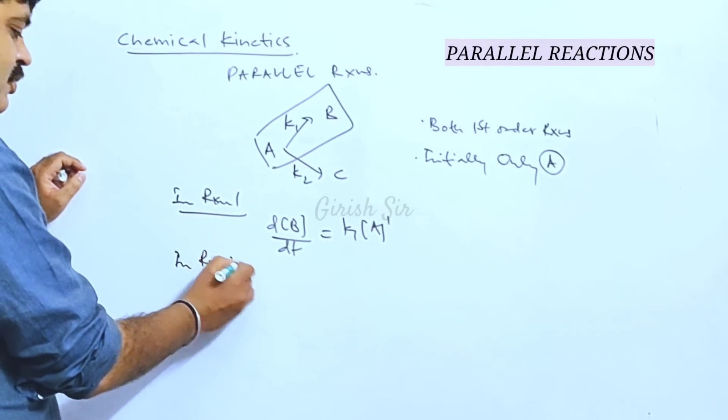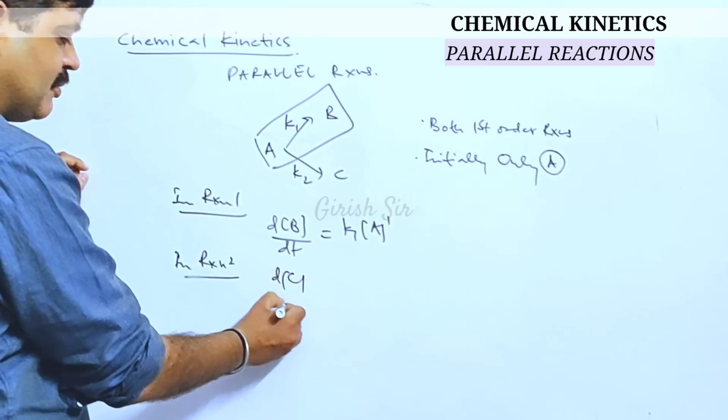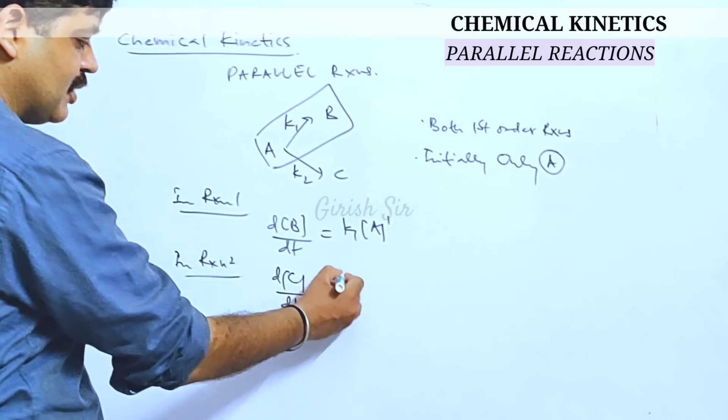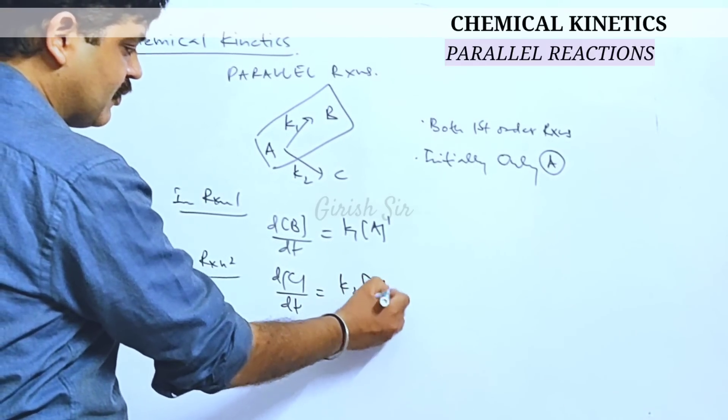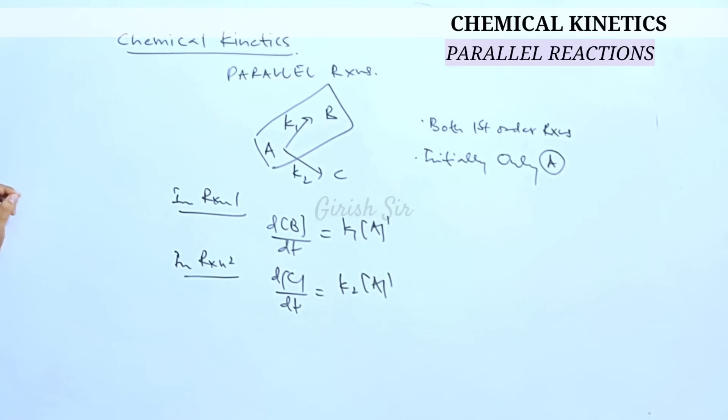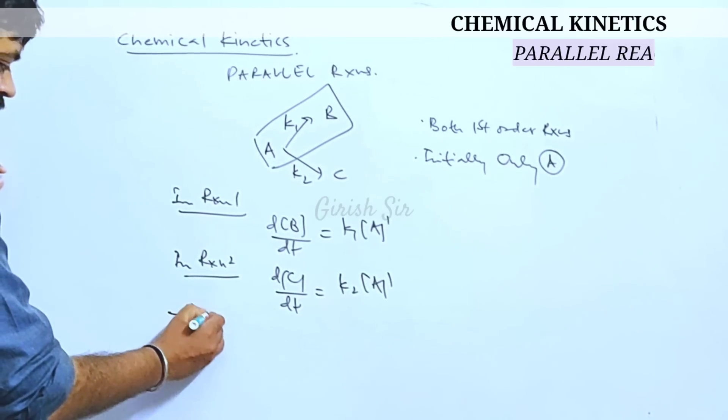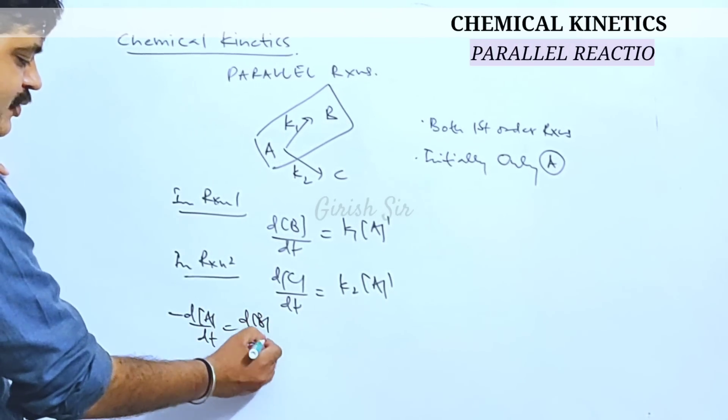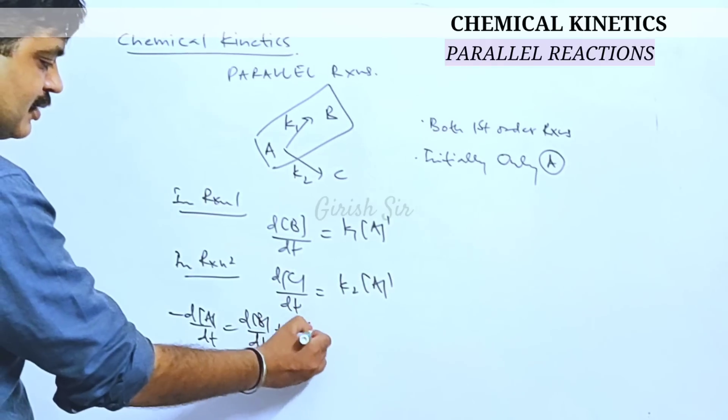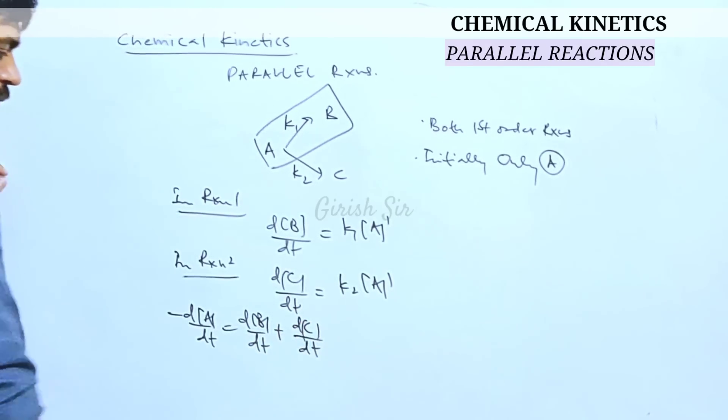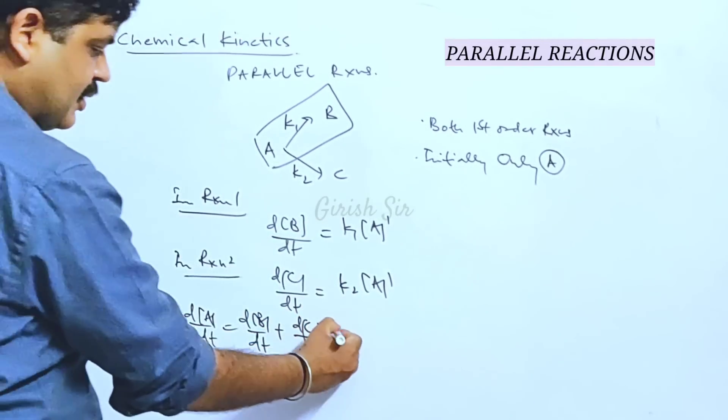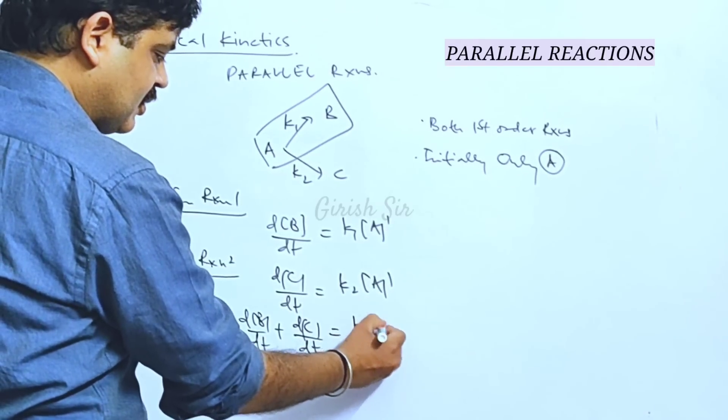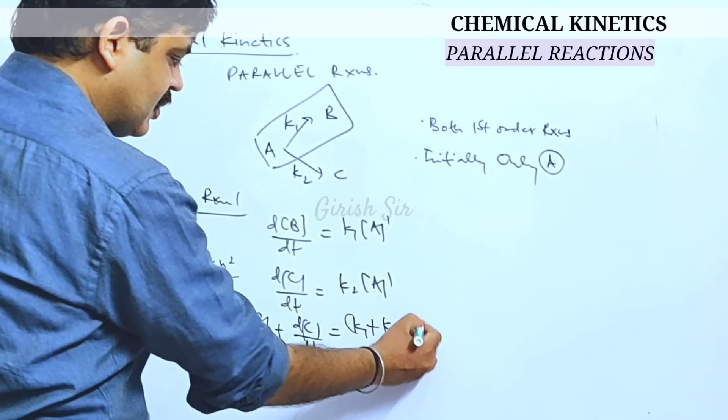In reaction two, similarly you can write dC/dt rate of formation of C would be K2 into A raised to 1. Now both of the bonds B and C are being obtained from A. So the net rate at which A gets consumed should be sum of the rates of production of B and C. If we use these two expressions here, I will be getting K1 plus K2 into A.